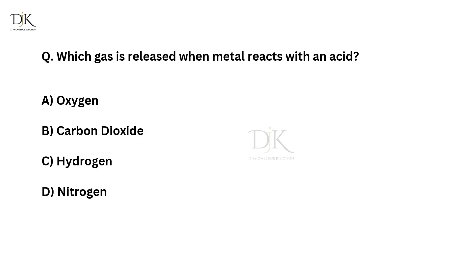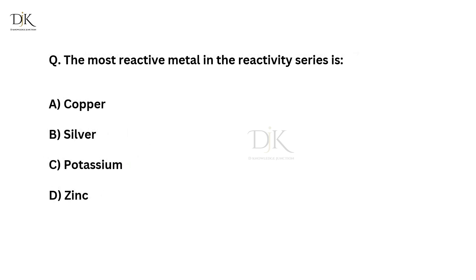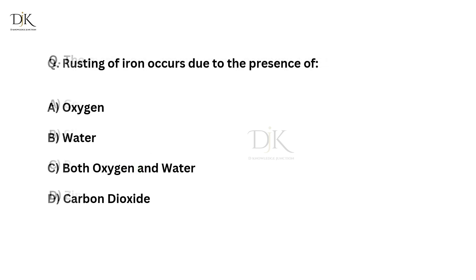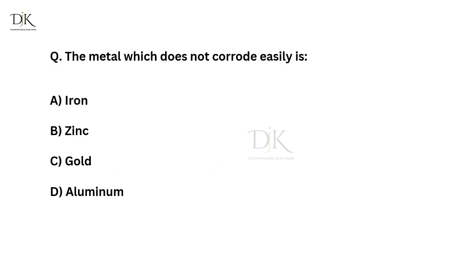Which gas is released when metal reacts with an acid? Correct answer is hydrogen. The most reactive metal in the reactivity series is? Correct answer is potassium. The metal which does not corrode easily is? Correct answer is gold.